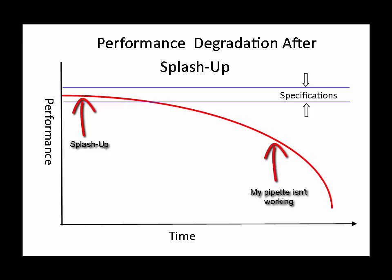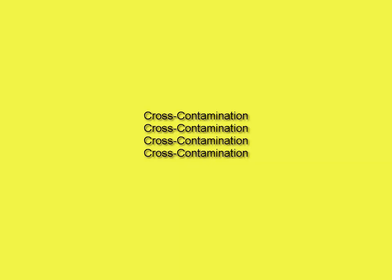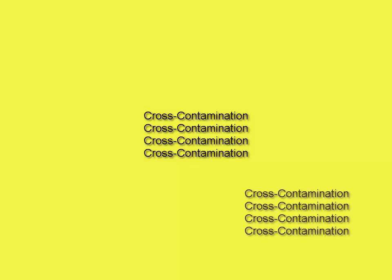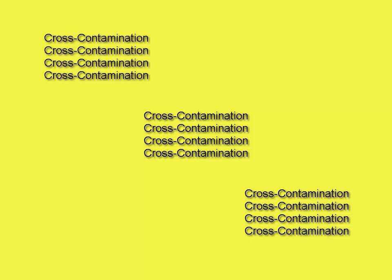By the time a researcher notices the pipette isn't working, it actually has been out of calibration for a very long time. The second reason to clean it out immediately is the pipette has the potential to cross-contaminate every subsequent experiment, causing seriously unreliable results.